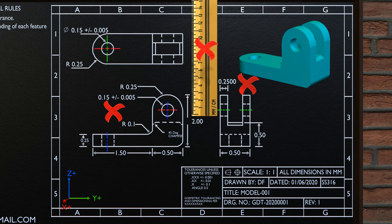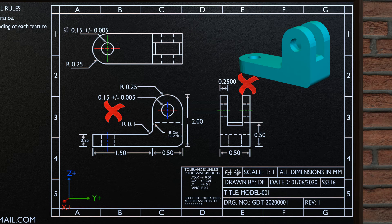Look for this dimension in other views of the object. In this case, this dimension is shown in the front view of the object. To know about different types of views, subscribe to my channel and look out for my video on different types of views.